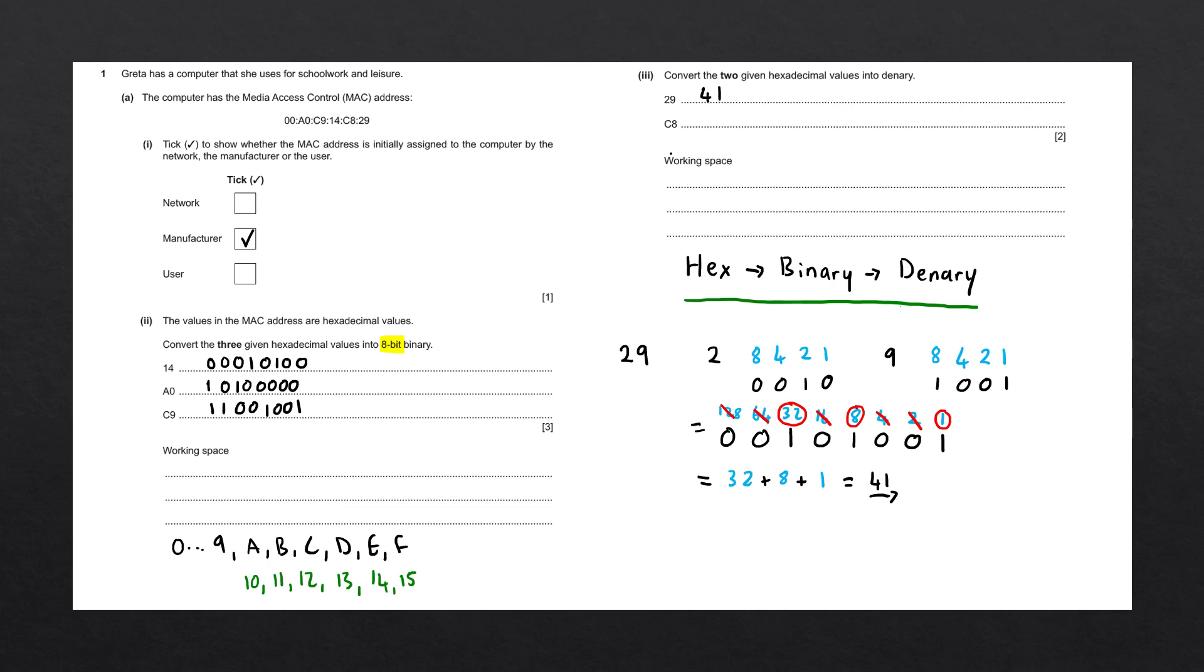Let's do C8. Working out each of these hexadecimal numbers individually, C is equivalent to 12. Which numbers do we need to make up 12? Well, we've worked it out before, that's 8 and 4, so our number is 1100. 8 is already a denary number, and the number we need is just 8, so our number is 1000. We're left with the binary number 1100 1000.